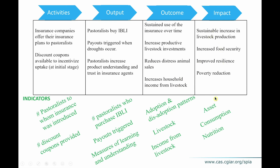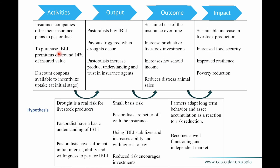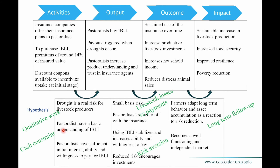Outcome indicators include adoption and dis-adoption patterns as an important medium-term outcome, along with livestock holdings and income from livestock. For the final impact level, you can collect data on asset consumption, nutrition, and poverty reduction through consumption measures. Typically, initial measures come from monitoring and administrative data, and as you move toward impacts, you increasingly need your own survey data. The hypotheses also help you think about what indicators and data to collect.